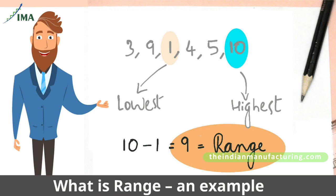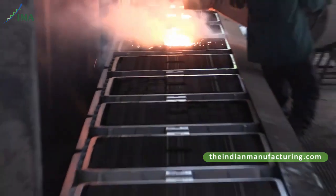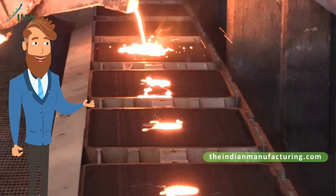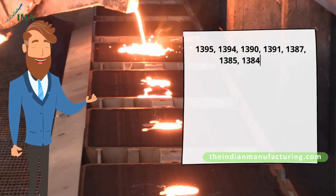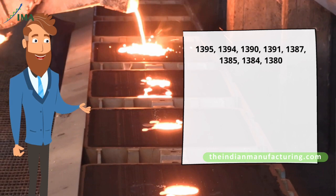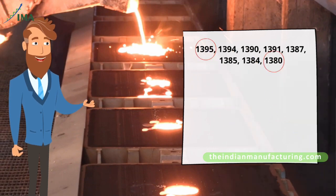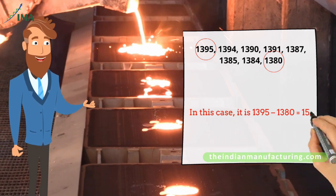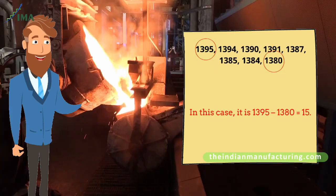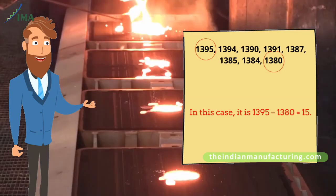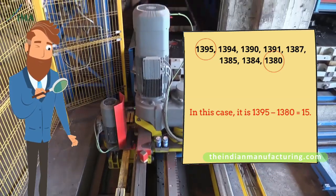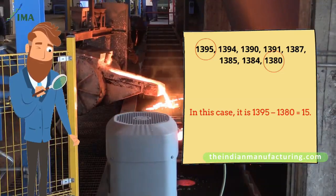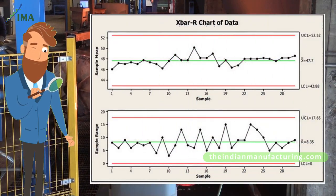What is range? In a foundry, metal from one ladle is used to pour six to eight molds. The pouring temperature of each mold may vary slightly. The range is the difference between the highest value and the lowest value — for example, 1395 minus 1380 equals 15. This way, the range value may be taken from pouring several ladles, helping us understand the temperature range in which we are operating while pouring metal.